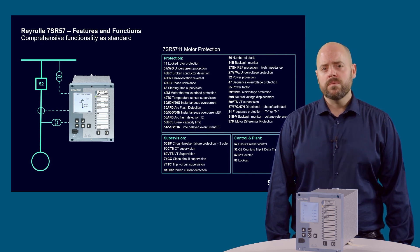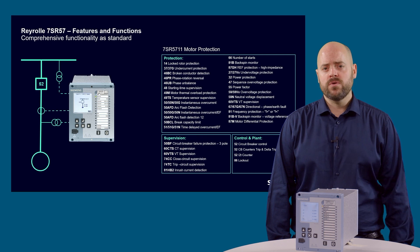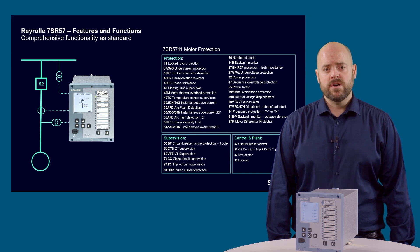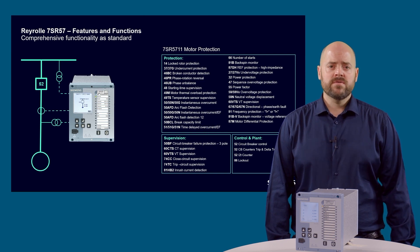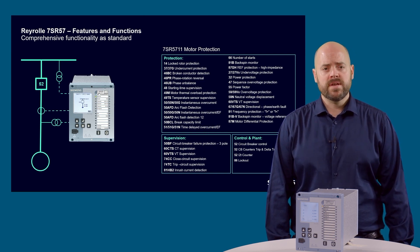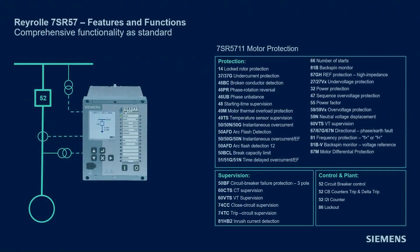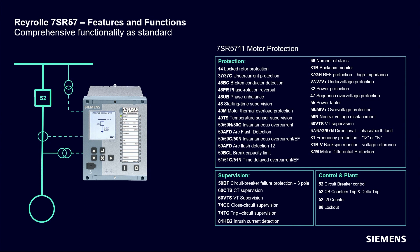The 7SR5711 motor protection device has 4 CT inputs and 4 VT inputs, which allow additional functionality over the 7SR5710. Also available are 7SR5721 devices with 8 CT inputs; devices with 8 CTs can provide motor differential protection. With the addition of the voltage inputs, the device has all associated protection functions including under-voltage protection function 27, which can be used to disconnect the motor in the event of low terminal voltage, as well as power flow monitoring function 32 and comprehensive current and voltage-based instrumentation.